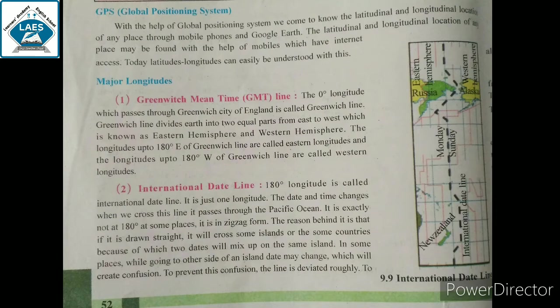The zero degree longitude which passes through Greenwich city of England is called the Greenwich line. England की एक city है जिसका नाम Greenwich है। वहाँ से zero degree longitude pass होता है। The Greenwich line divides the earth into two equal parts from east to west, which are known as the eastern hemisphere and western hemisphere.